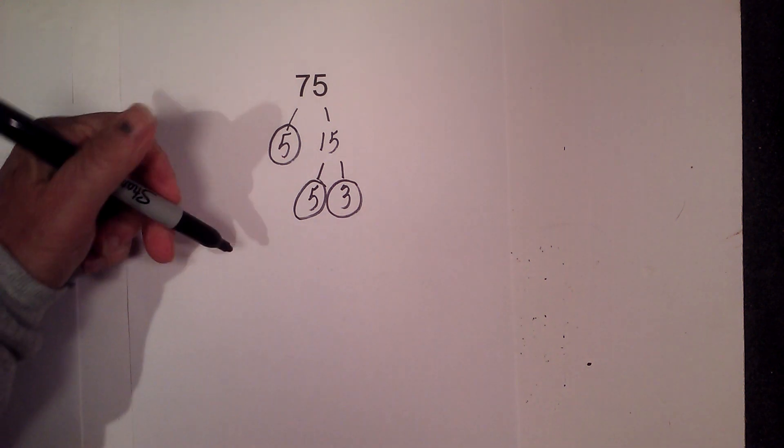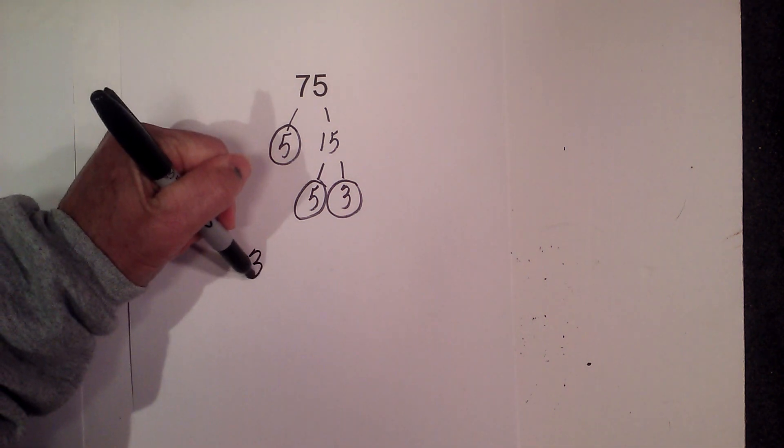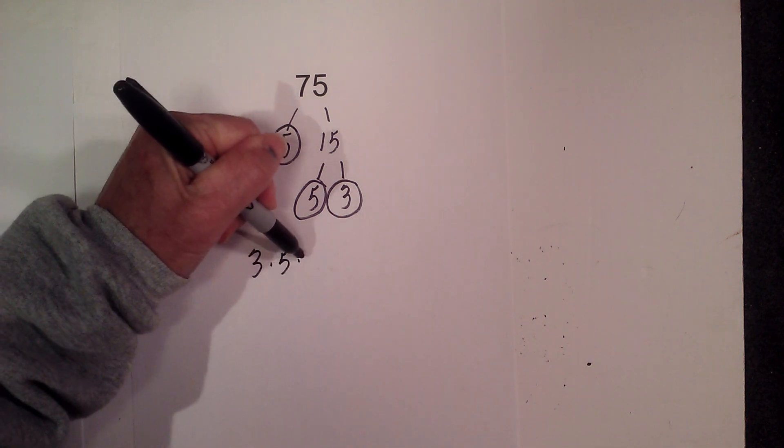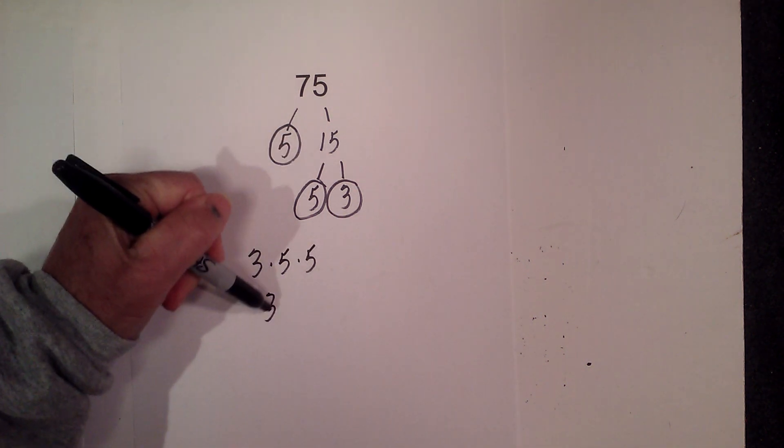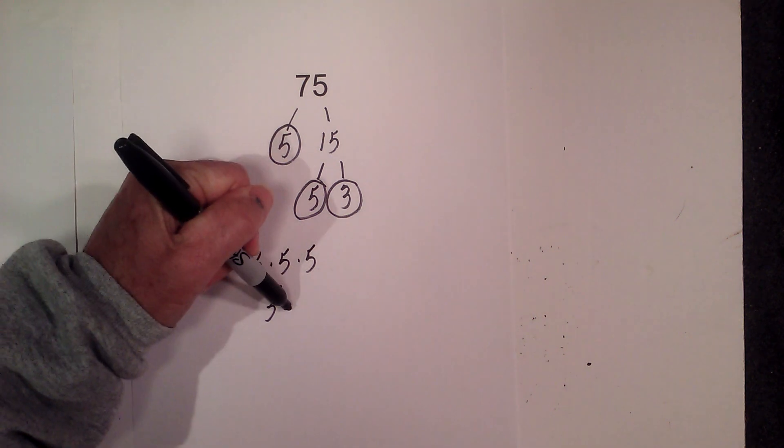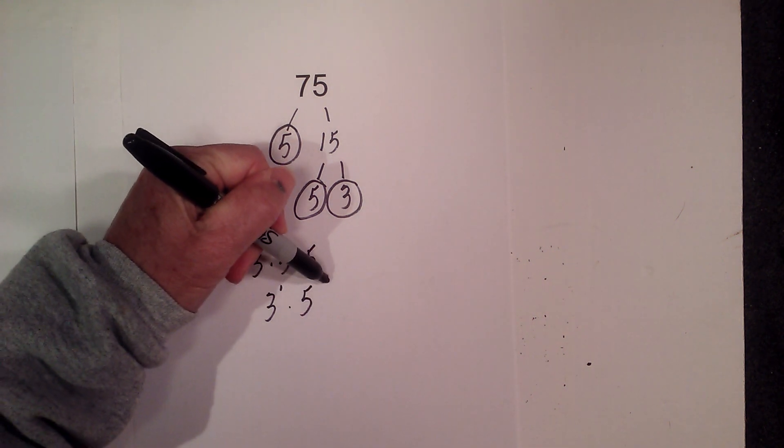Let's rewrite it. I can write it as 3 times 5 times 5, or I could write it as 3 to the first times 5 squared.